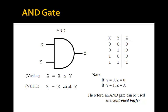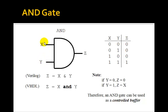Here's an AND gate truth table. Notice that if Y is equal to 0, the output Z is always 0. But if Y is 1, then the output Z is the same as X. So we can use the AND gate as what we call a controlled buffer. That is, if you want to let X get through, you make Y 1. If you want the output Z to be 0 all the time, just make Y 0.